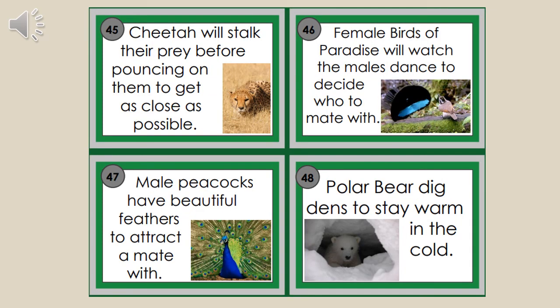Card 45: Cheetahs will stalk their prey before pouncing on them to get as close as possible. Card 46: Female birds of paradise will watch the males dance to decide who to mate with. Card 47: Male peacocks have beautiful feathers to attract a mate. Card 48: Polar bears dig dens to stay warm in the cold.